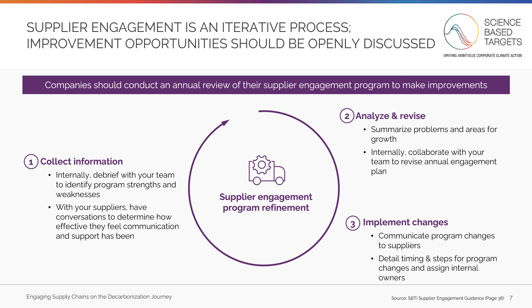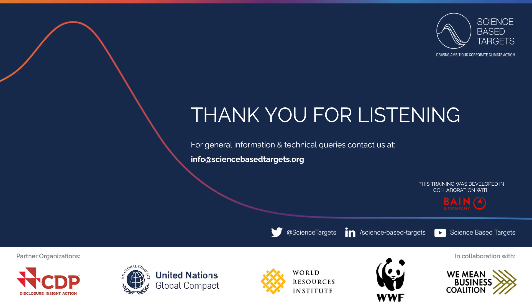Lastly, you should communicate your program changes to suppliers, making clear how these changes will affect them. In conjunction, you should detail the timing and necessary steps for these program changes and assign owners within your team. Thank you for listening to this module on enabling and tracking supplier performance. We hope this information will help as you engage your supply chain on the decarbonization journey.